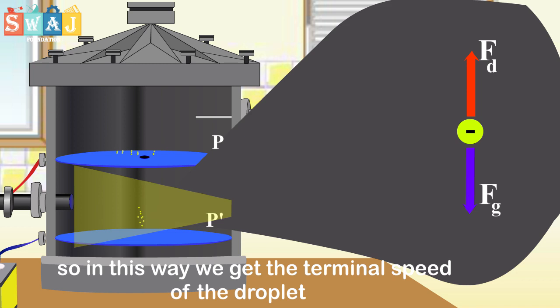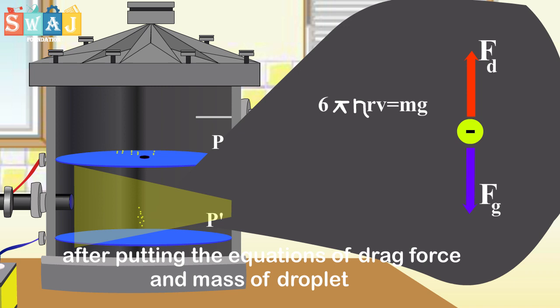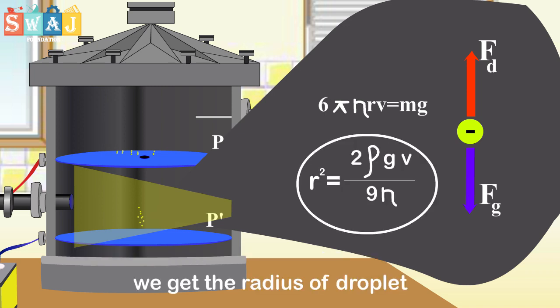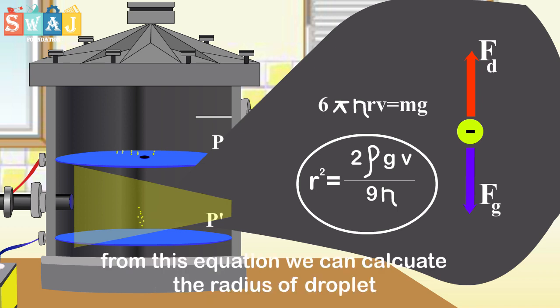In this way, we can get the terminal speed of the droplet. After putting the equation of drag force and mass of droplet, we get the radius of droplet. From this equation, we can calculate the radius of droplet.